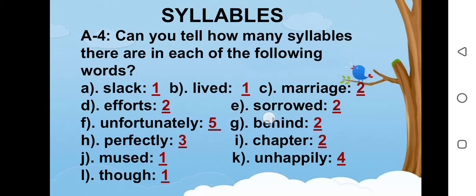E is sorrowed. This word has two syllables. F is unfortunately. This word has five syllables. G is behind. This word has two syllables. H is perfectly. This word has three syllables.